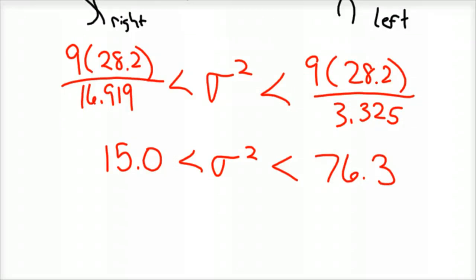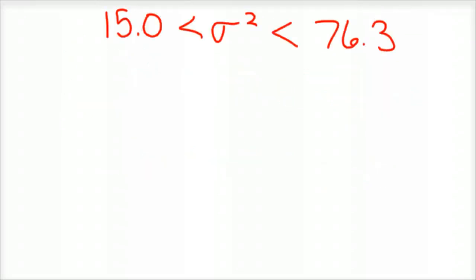And then all you do is take the square root of both of those numbers to find your standard deviation. So we know our population standard deviation is between 3.87 and 8.73.